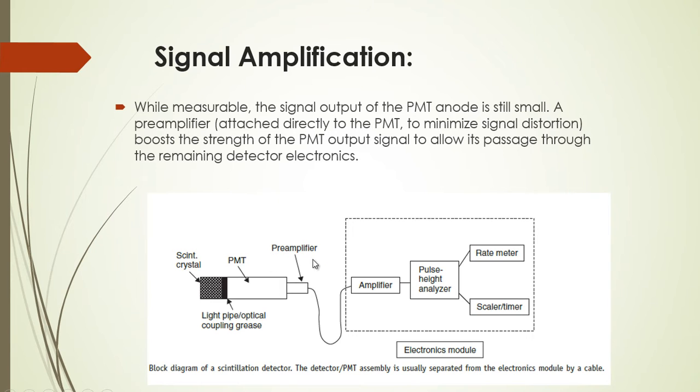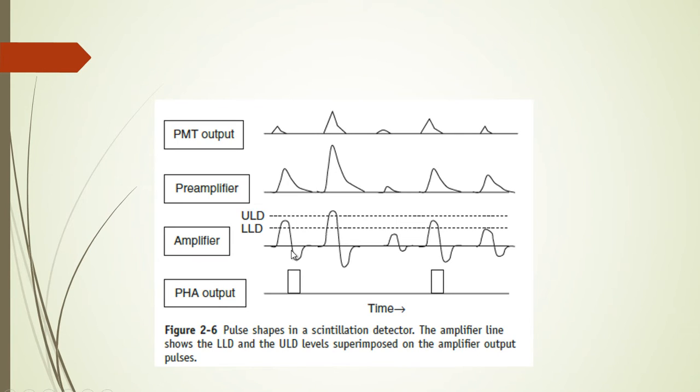Now the preamplifier amplifies the signal from the photomultiplier tube and it also widens the signal, as you can see from here. So this is the signal from your photomultiplier tube and the preamplifier is amplifying it as well as widening the signal.